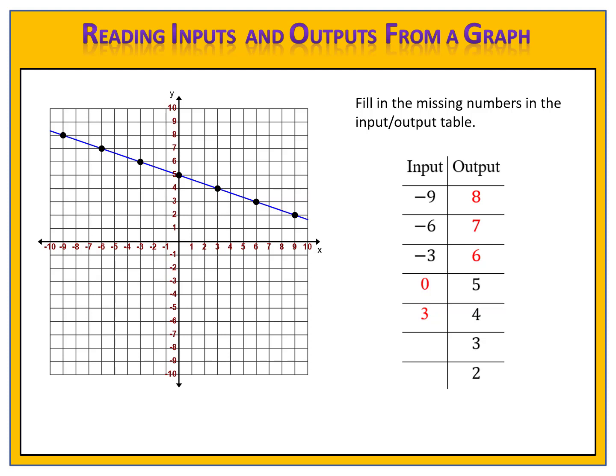Let's try another one. The output is 3. What is the input? Do you think you can find the input? Pause the video here and give it a try. Come back when you're ready. Let's see how you did. We're told that the output is 3 and we want to find the input. That means we have a point on our graph where the y value is 3, and we need to find the x. We draw a line across at 3 and look for where it crosses our graph. It crosses right here. The input, or x value, is 6. Therefore, that point on the graph is 6, 3, and our input is 6.